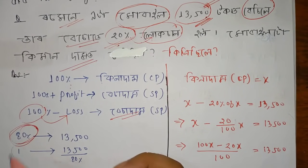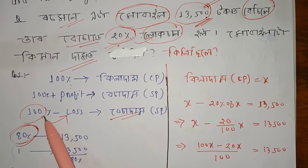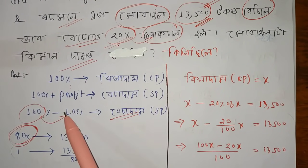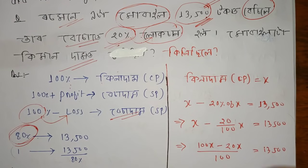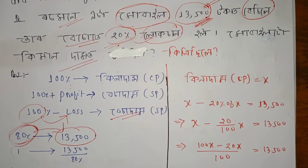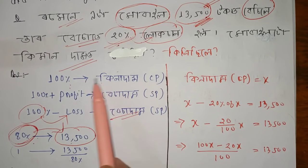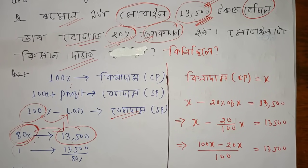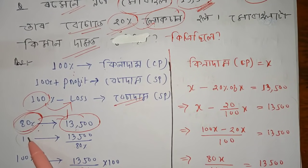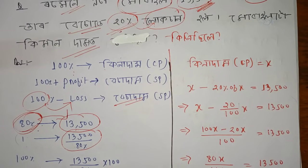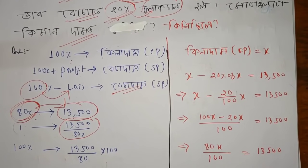From 100% minus 20%, if you have a loss, that will be 80%. It is not clear that the price index — this shows that 80% is equal to the selling price. The cost price is found by dividing accordingly.